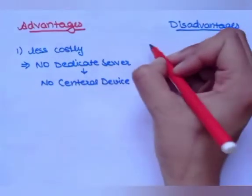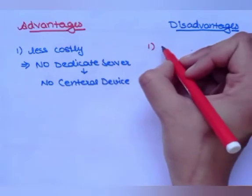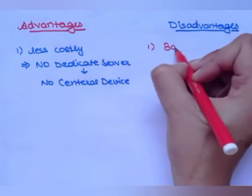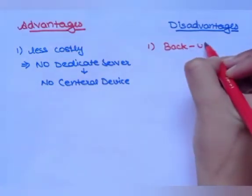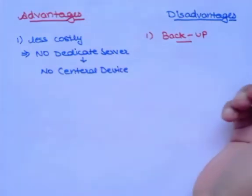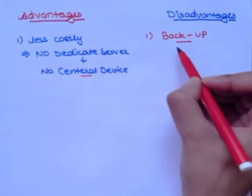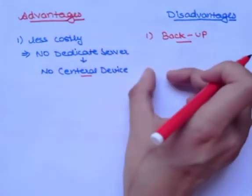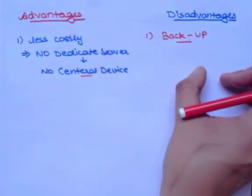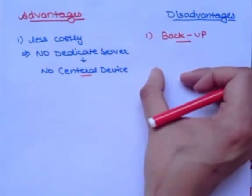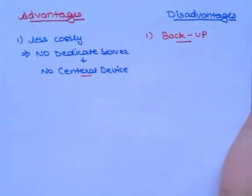The disadvantage of peer-to-peer is that it does not contain a centralized device, therefore it cannot backup data. It is not possible to backup data using a peer-to-peer network because there is no central device available. Every device behaves as both client and server on its own, making it very difficult to backup data.